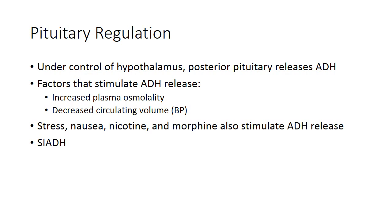The pituitary gland, which is under the control of the hypothalamus, is where antidiuretic hormone is released. ADH responds to increased plasma osmolality and also to decreased circulating volume. Figure 17-8 demonstrates that should the kidneys sense decreased volume, several other mechanisms come into play, including stimulation of antidiuretic hormone, and we'll talk about renin and aldosterone in a minute. Stress, nausea, nicotine, and morphine also stimulate the release of antidiuretic hormone.